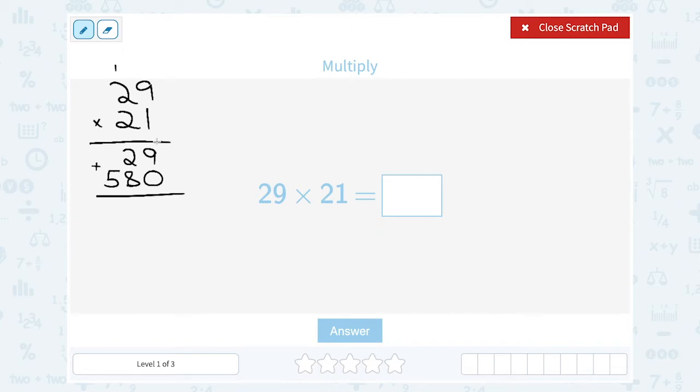So we're just going to add them and make sure you're lining up the numbers in the ones place, the tens place, and the hundreds place. So in our ones place, or ones column, 9 plus 0 equals 9. In the tens column, 2 plus 8 equals 10. So I'm going to write my 0, carry the 1, and 5 plus 1 equals 6. So that gives me 609.